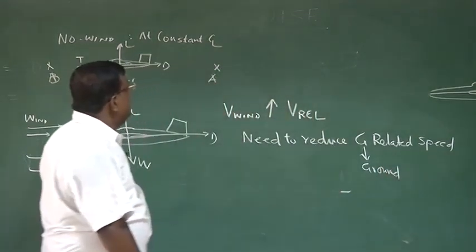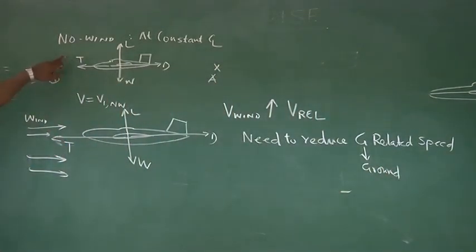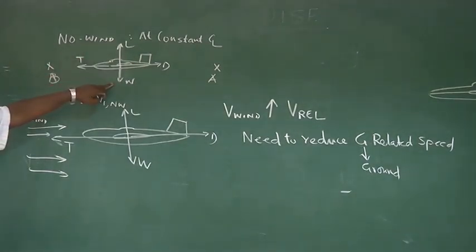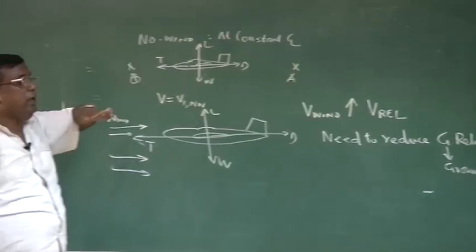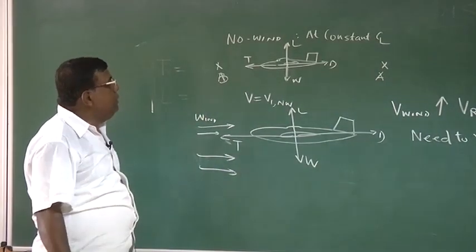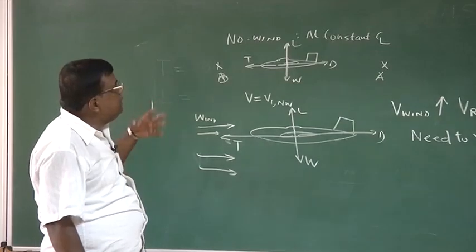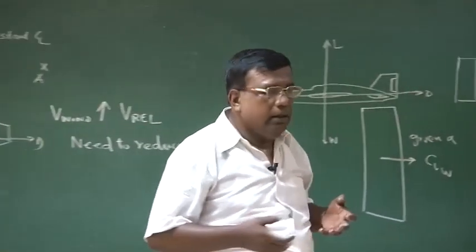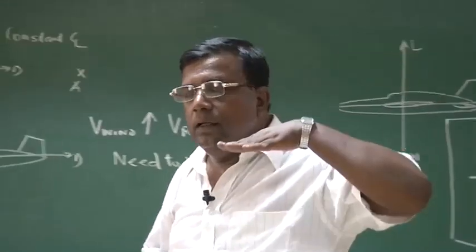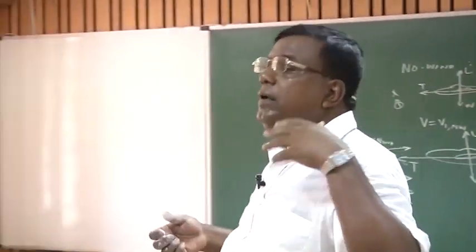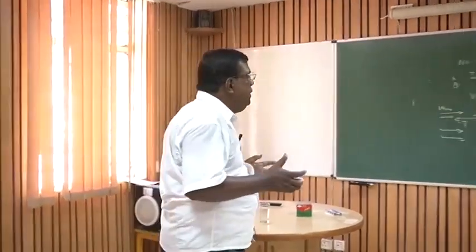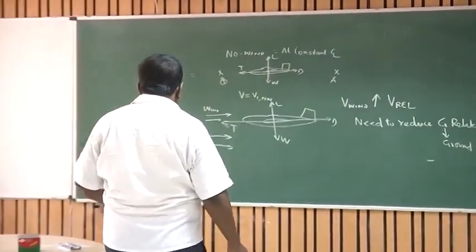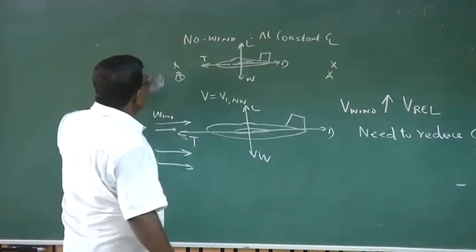The air-relative speed remains the same as in the first case and lift is equally balanced with the weight — otherwise the airplane will lift up. This concept will be used when we are moving an airplane into the wind, or there is a tailwind, to understand how the overall performance of the airplane will change — sometimes to advantage, sometimes to disadvantage.